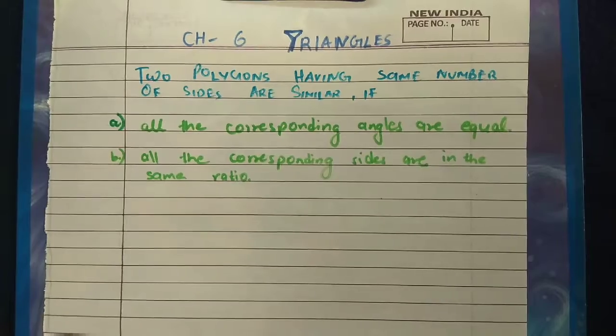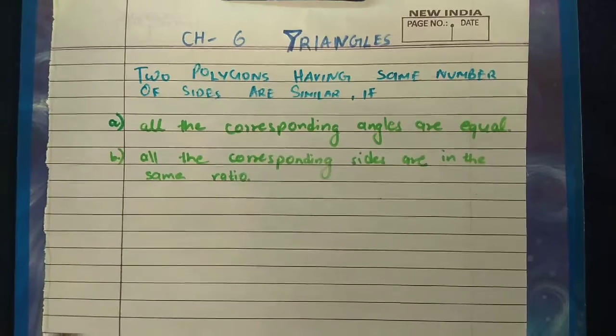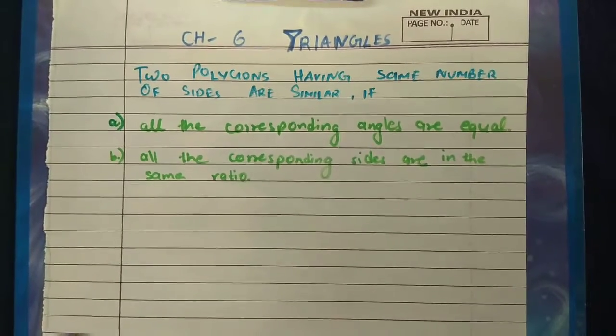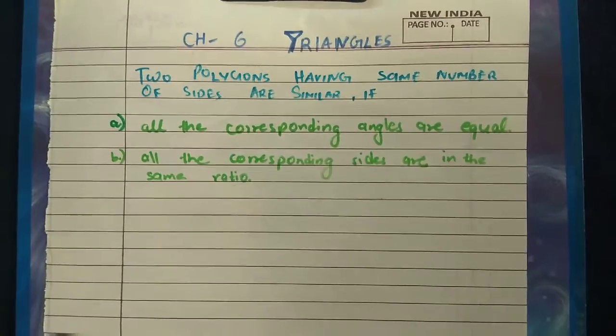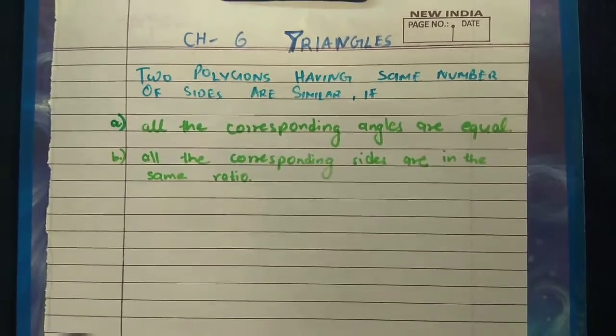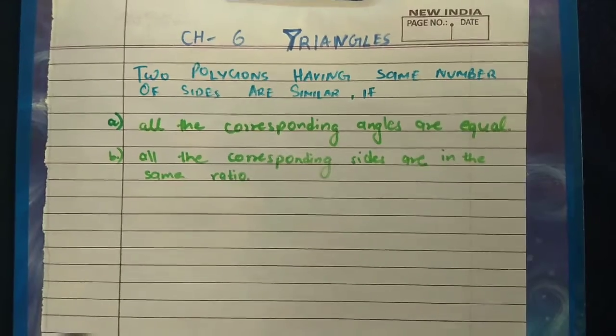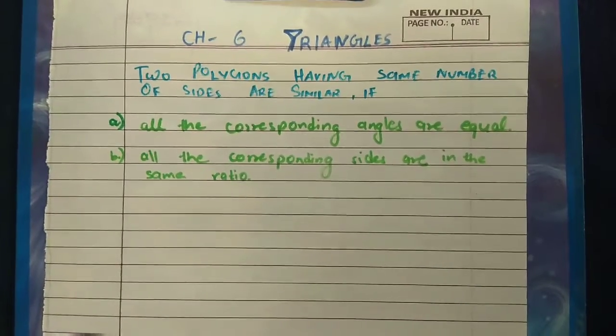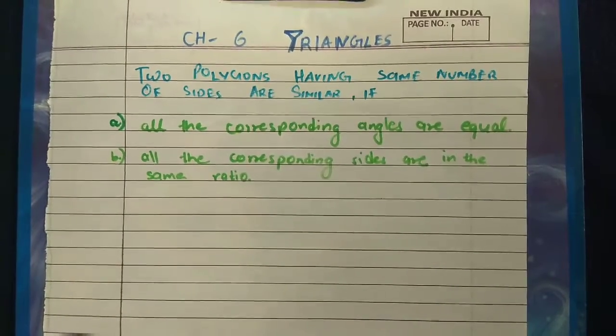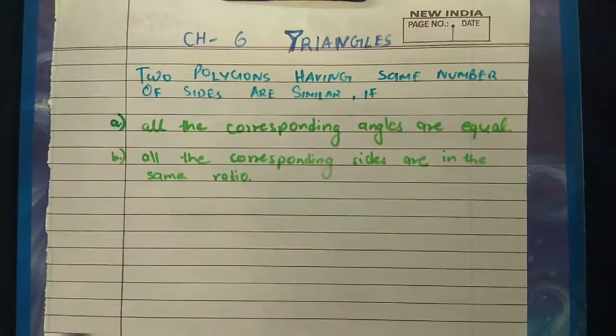We need to check that the same triangles are similar triangles and congruent triangles. For congruence of the triangles, we have learned that we have to check the angles and sides.